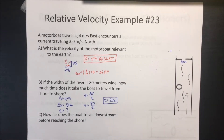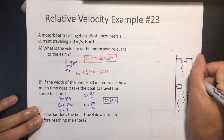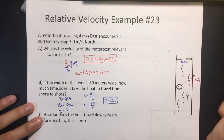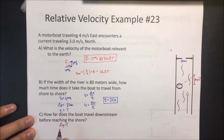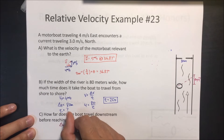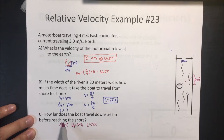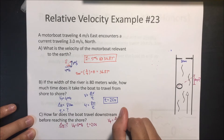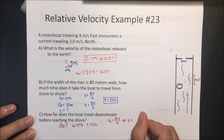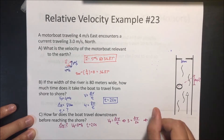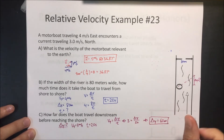Part C: how far does the boat travel downstream before reaching the shore? We're looking for displacement in the y-direction. The boat is moving 3 meters per second in y and it's in the water for 20 seconds. Using velocity equals displacement over time: 3 = displacement_y / 20, giving us displacement in y equals 60 meters.